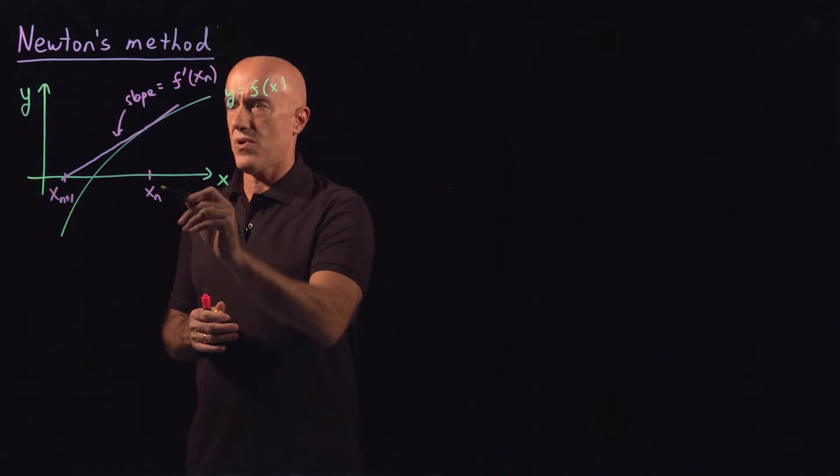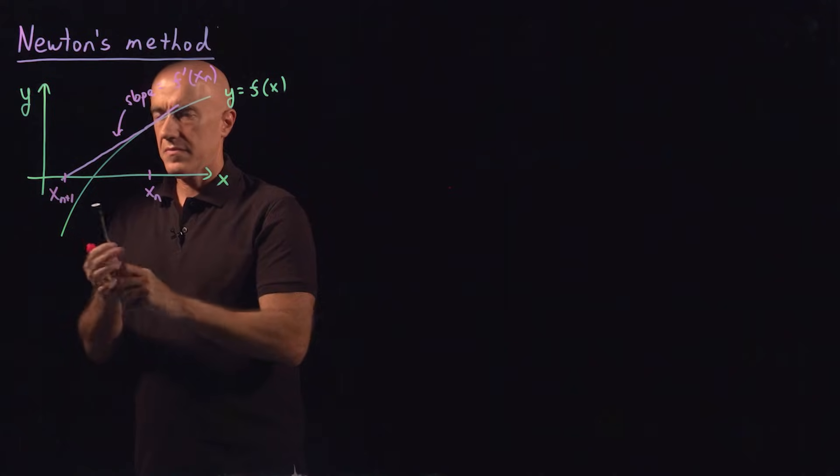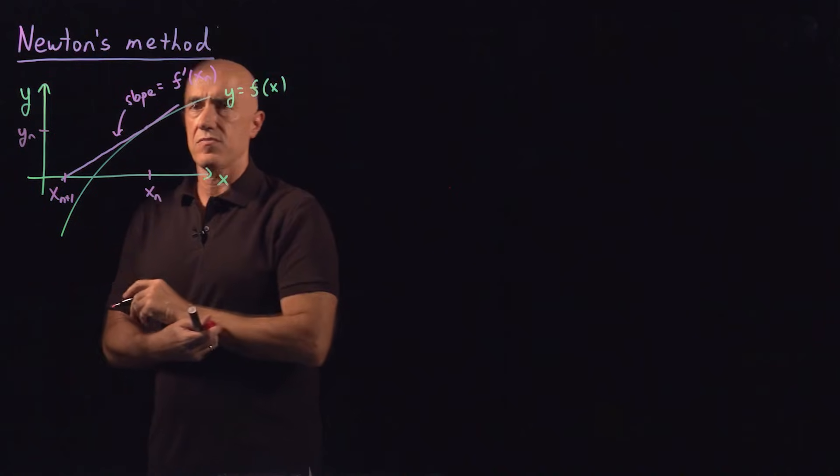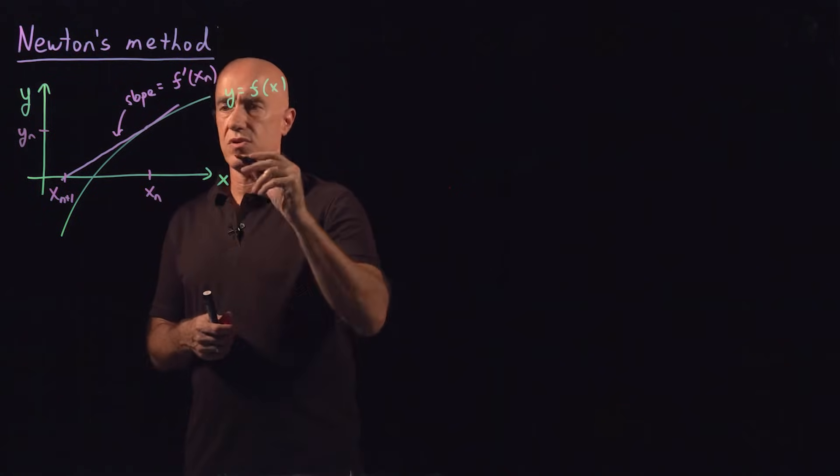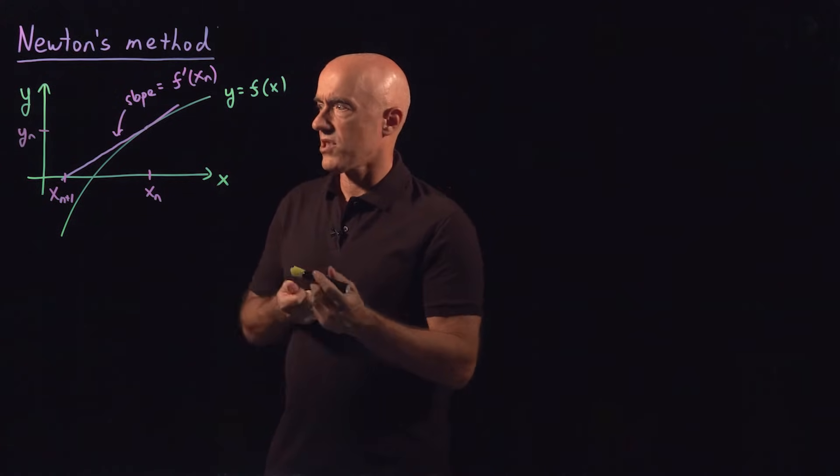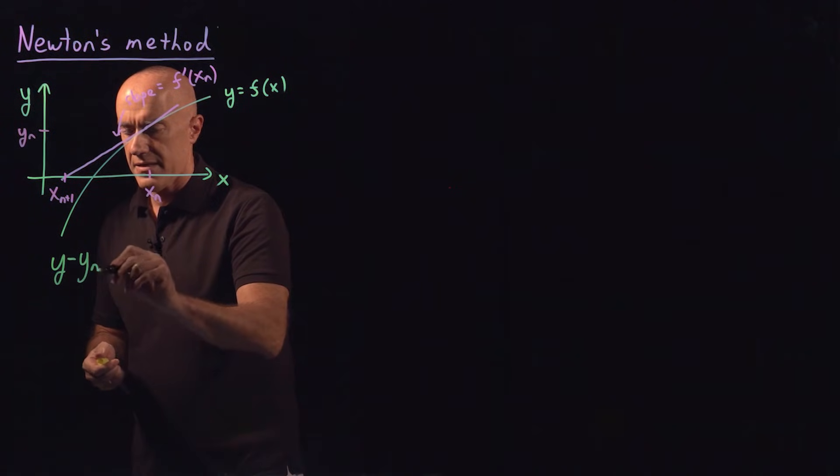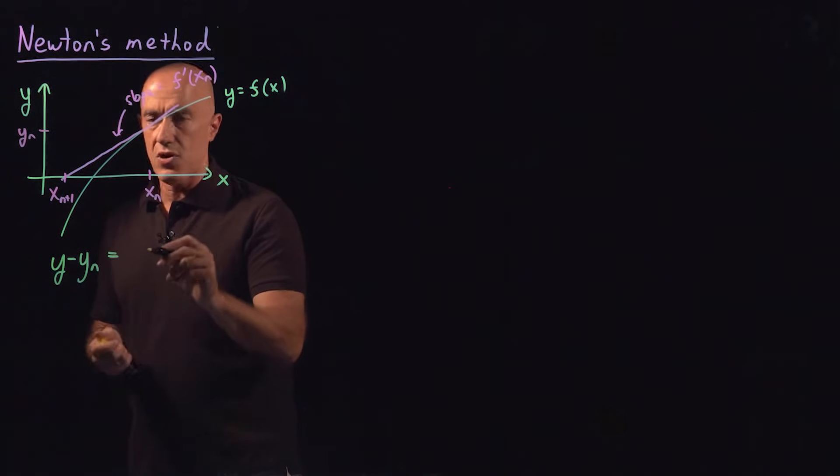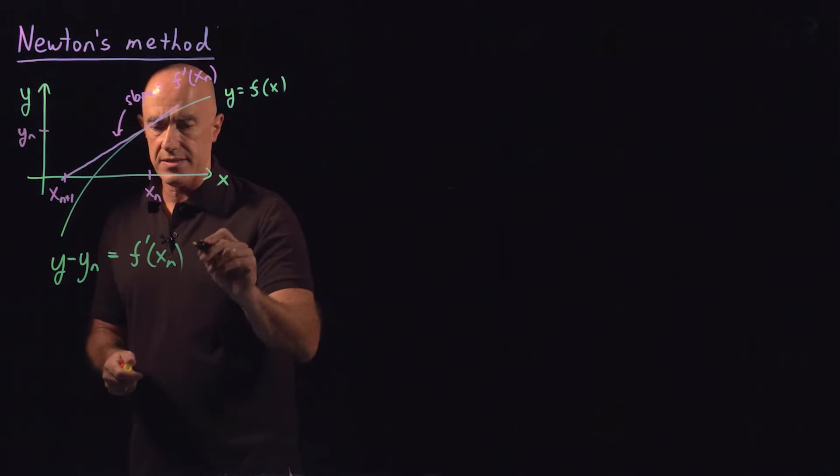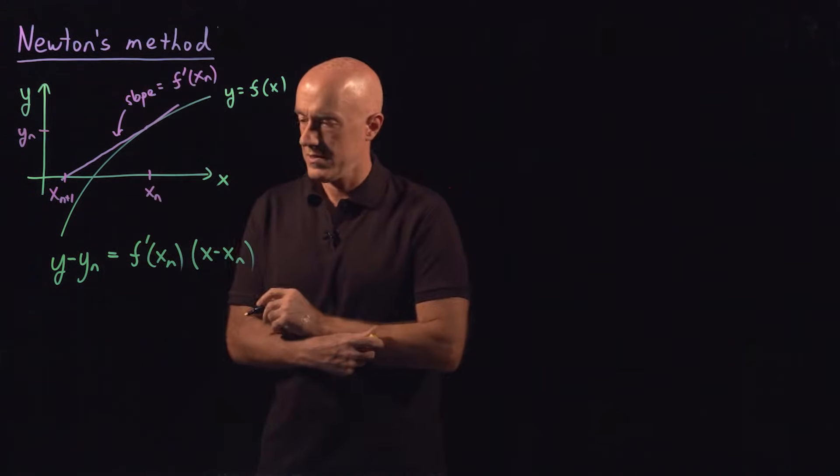We know the point x_n, y_n here. So let me just call this one y_n. We know y_n is equal to f of x_n. So we have the equation for the line then is delta y. So y minus y_n is equal to the slope f prime of x_n times delta x. So times x minus x_n.